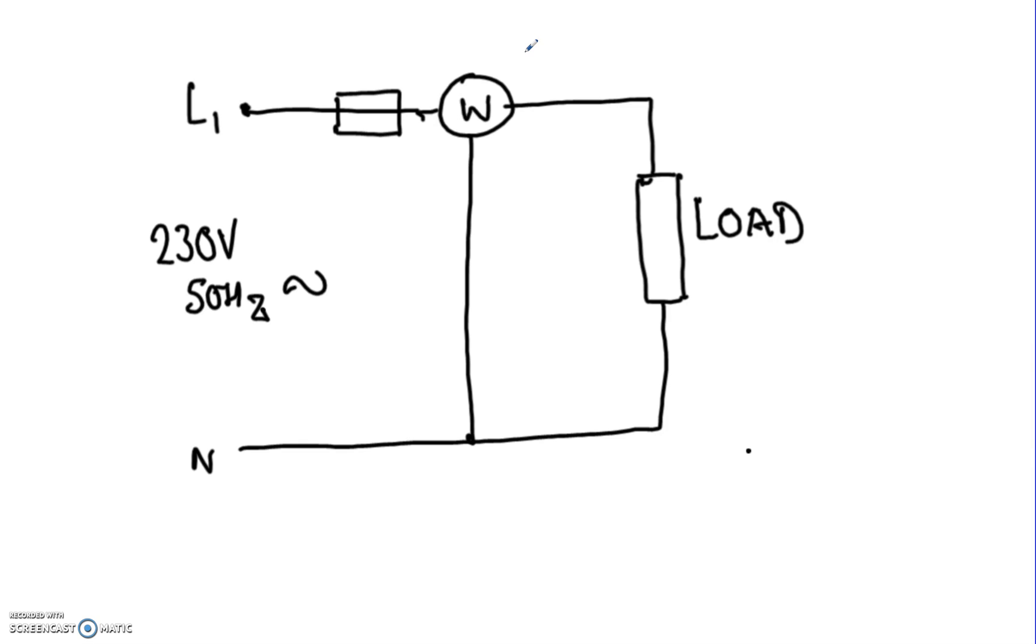But when you start getting up to very high levels of current, then you would certainly use CTs and voltage transformers as well, connected across the supply. And they would feed into an actual electronic wattmeter where you would have some amplifiers and some analog to digital conversion. So it can do the maths to determine what the actual wattmeter reading would be.